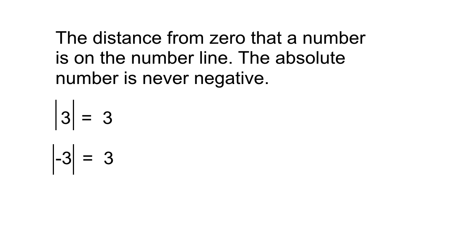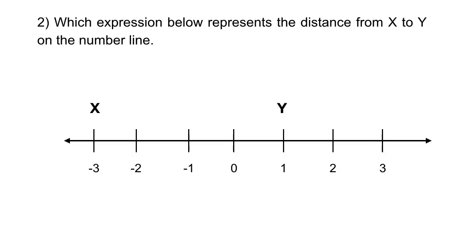Whenever you see a number surrounded by these vertical bars, whatever number is inside those vertical lines is going to turn positive. So if you have 3 surrounded by absolute value bars, that's 3. And if you have negative 3 surrounded by absolute value bars, that's also 3 — whatever is inside those bars turns positive. Now let's talk about the number line. They're asking which expression represents the distance from x to y.